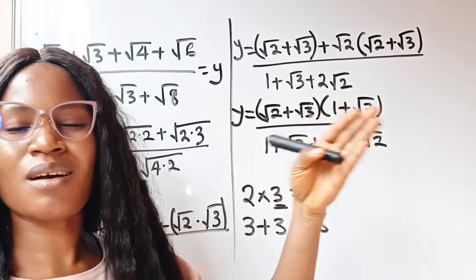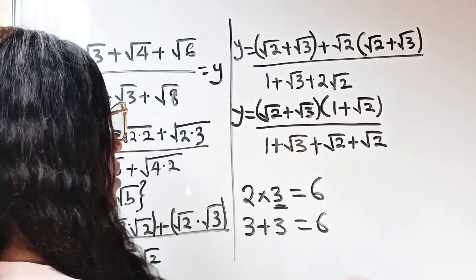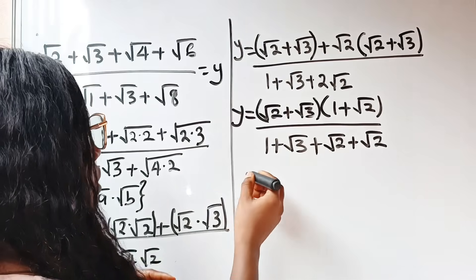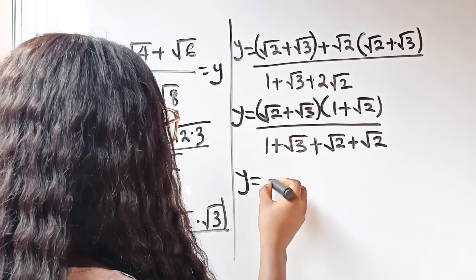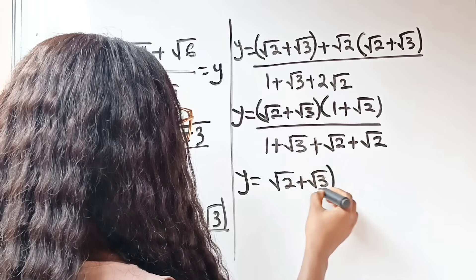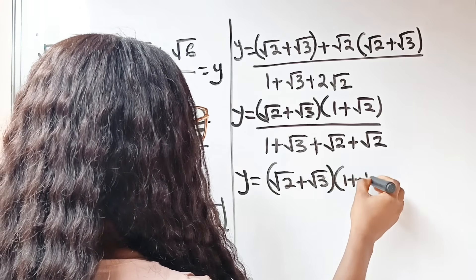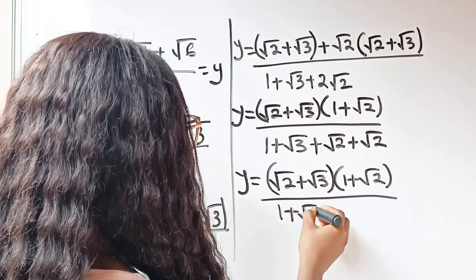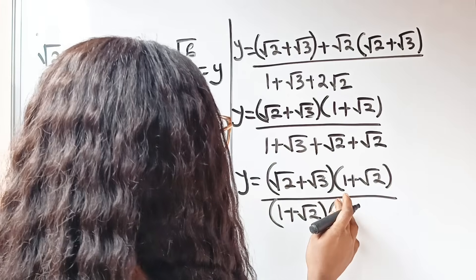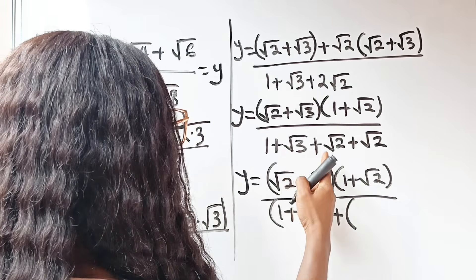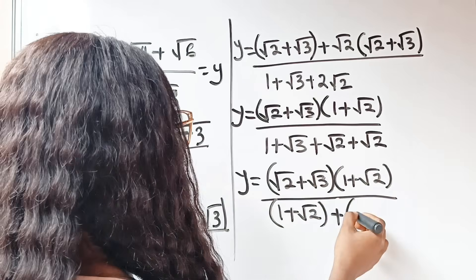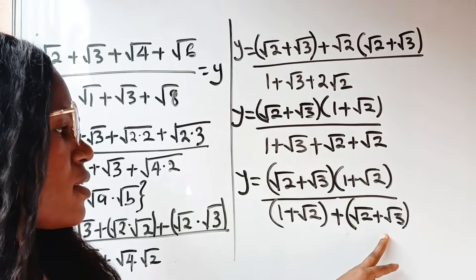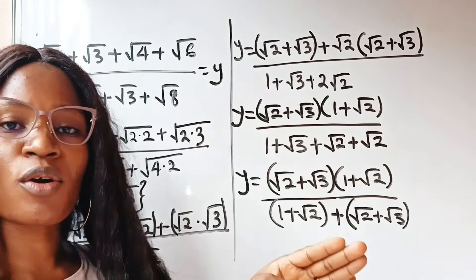Some of you may say I'm wrong in the comments, which is why I took time to explain that. Now we are on the same page. So we have Y equal to root 2 plus root 3, multiplied by 1 plus root 2, divided by 1 plus root 2 plus root 3 plus root 2. You can see that we have matching groups both in the numerator and denominator, and this is becoming simpler.